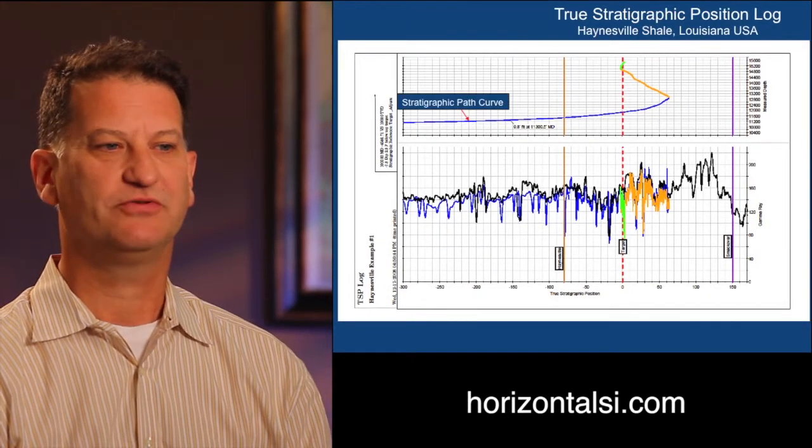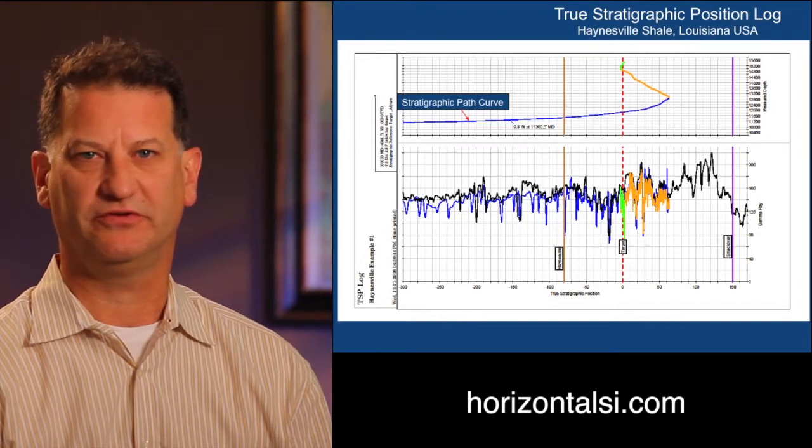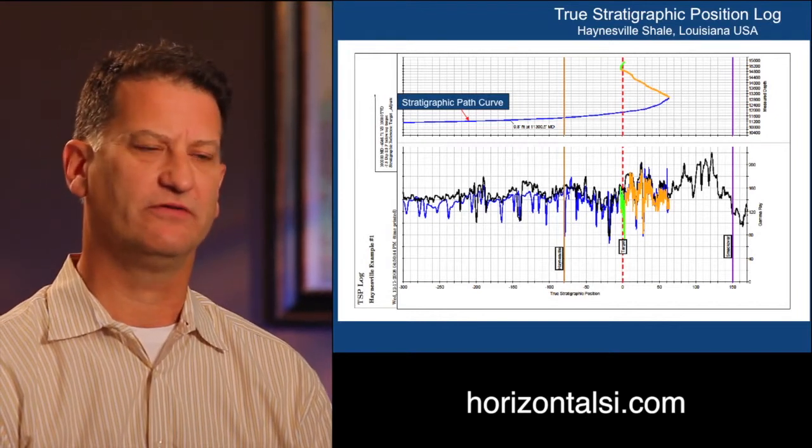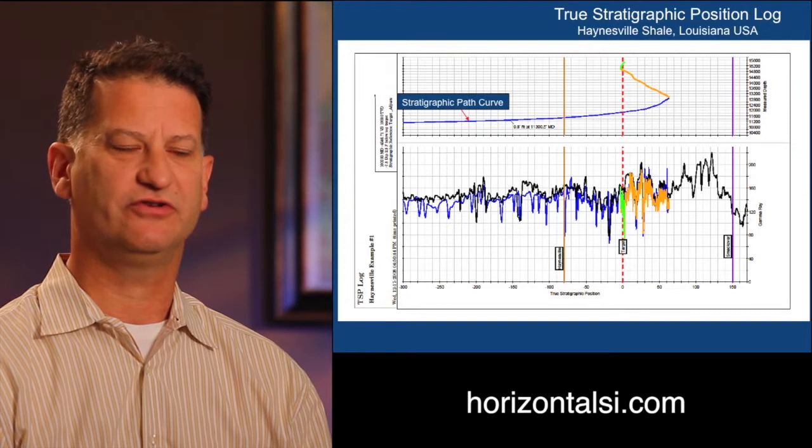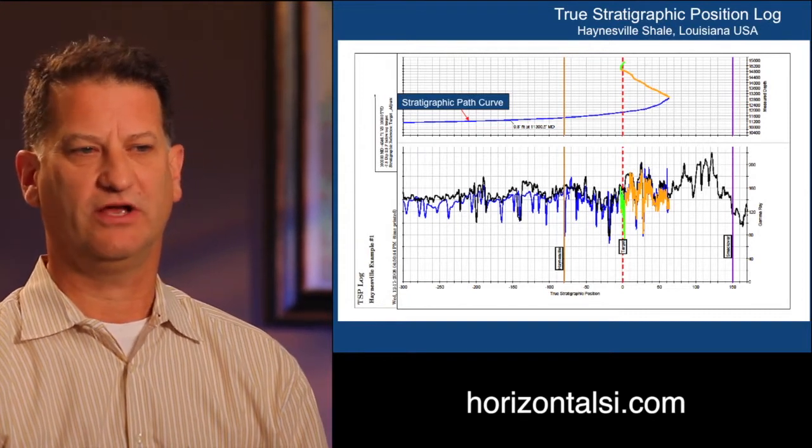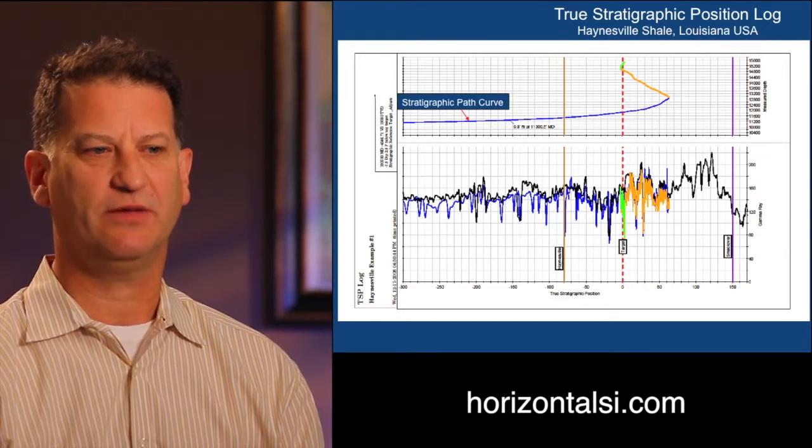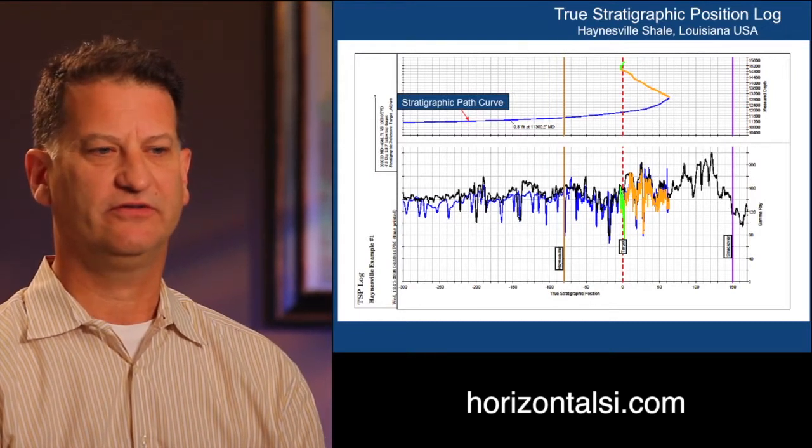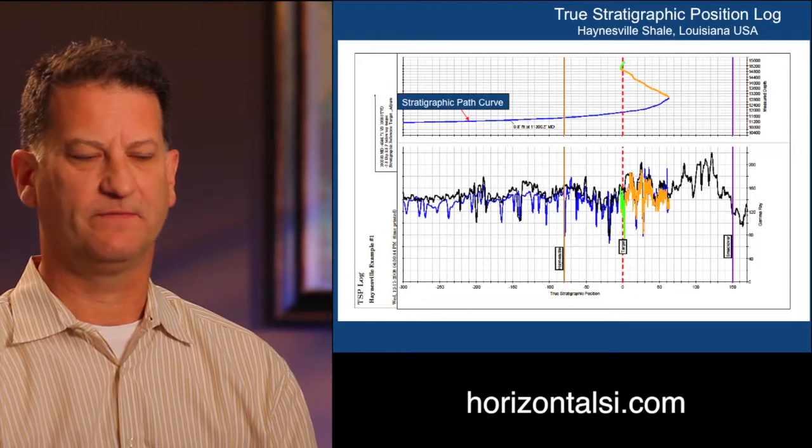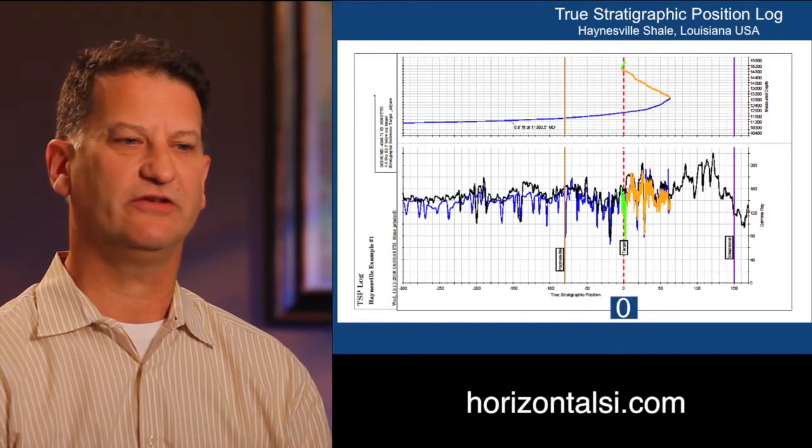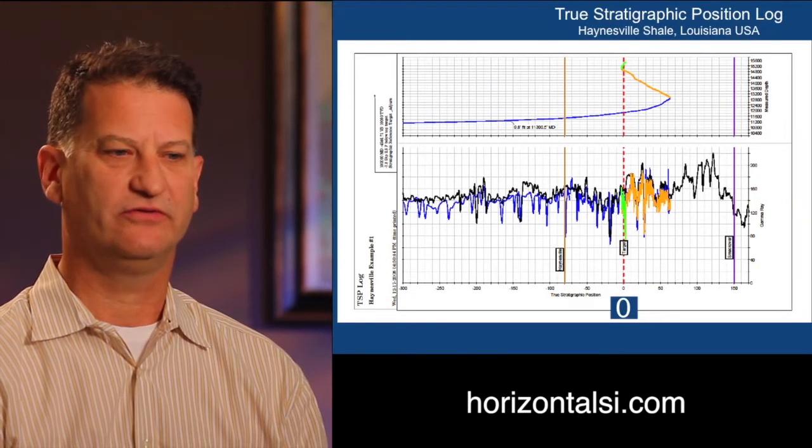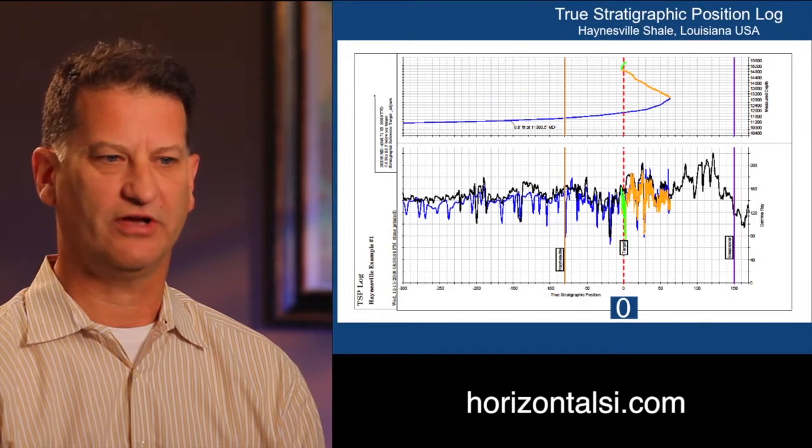The track on top shows the stratigraphic position curve or stratigraphic path curve. What this curve does, it shows the orientation of the well as you're drilling out through the section. Notice on the y-axis you're seeing measure depth. On the x-axis you have stratigraphic position. Notice that zero TSP is at our target position in the well, the top of target.